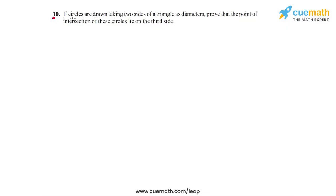Question 10 says that if circles are drawn taking two sides of a triangle as diameters, prove that the point of intersection of the circles lies on the third side. This is what we have to prove in this question.